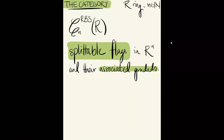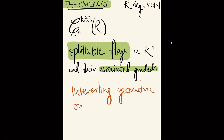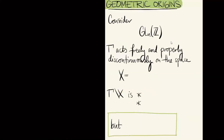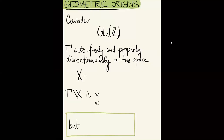An important aspect of this category is that it has some very interesting geometric origins. This is where the Reductive Borel compactification comes in, which is also why I'm denoting it by CRBS. What I want to do now — and what will take up most of this talk — is tell you where this category comes from, what these geometric origins are. Then I'll tell you about our investigations into this category as an unstable algebraic K-theory.